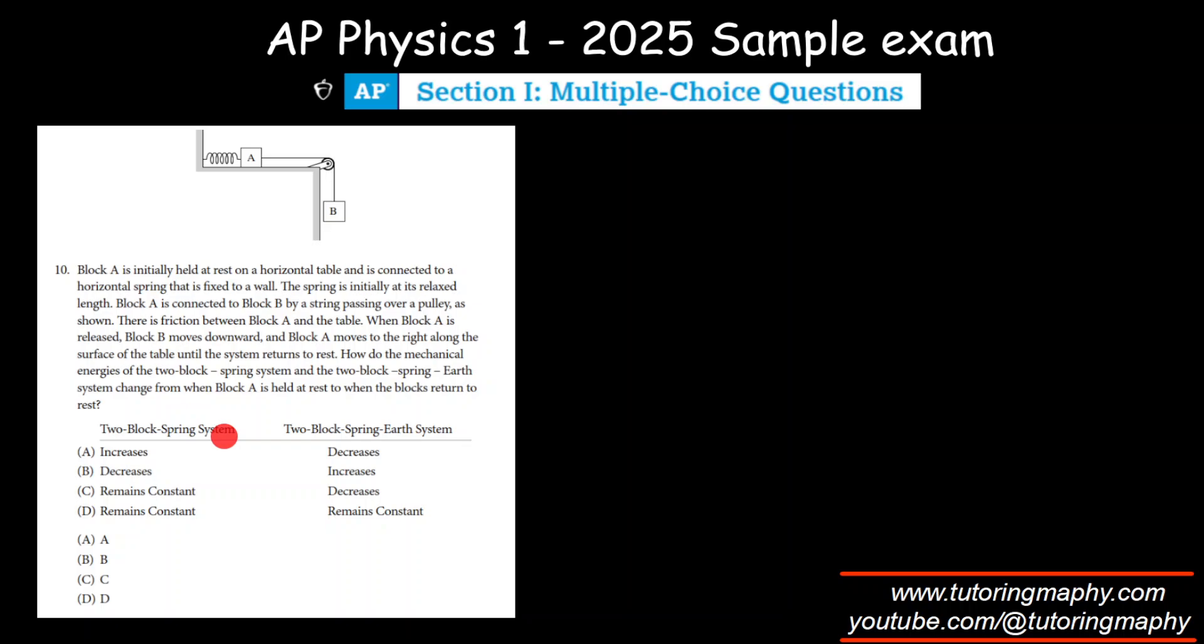Two-block spring system and two-block spring earth system. System means, how is the energy of these two blocks and the spring? However, friction doesn't really have involvement here. Because when we talk about mechanical energies, notice the word here: mechanical energies of two-block spring system.